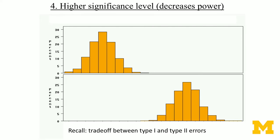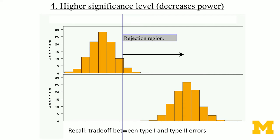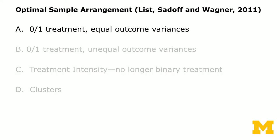The last factor is significance level, and a higher significance level decreases power. The rejection region is the alpha error rate, depicting the region on the right. If that becomes higher, shifting towards the right, there will be more overlap — the tails will overlap more with the distribution of the treatment, increasing the likelihood of an inference error. There is this same trade-off between type 1 and type 2 errors.